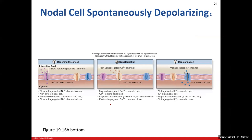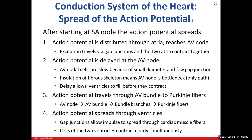Now that we know about nodal cells and where they're located, let's talk about how we spread our action potential — get the word out to the masses, which are our cardiac muscle cells. Our conduction system does that. It starts at the SA node, which initiates the action potential and spreads it throughout the atria, eventually reaching the AV node.